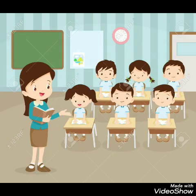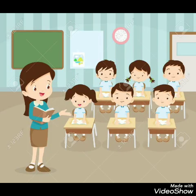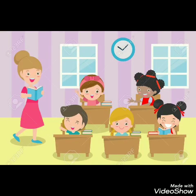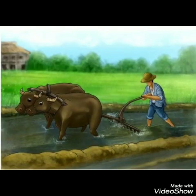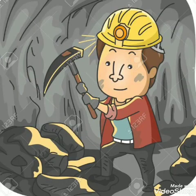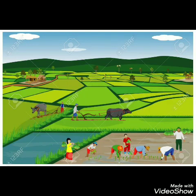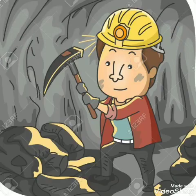Correct children. Now we are going to take a recap about your previous topic. What did you learn in your previous class? Primary occupation. A primary occupation means work that involves taking raw material from the environment. Examples: farmers, fishermen, miners, etc.